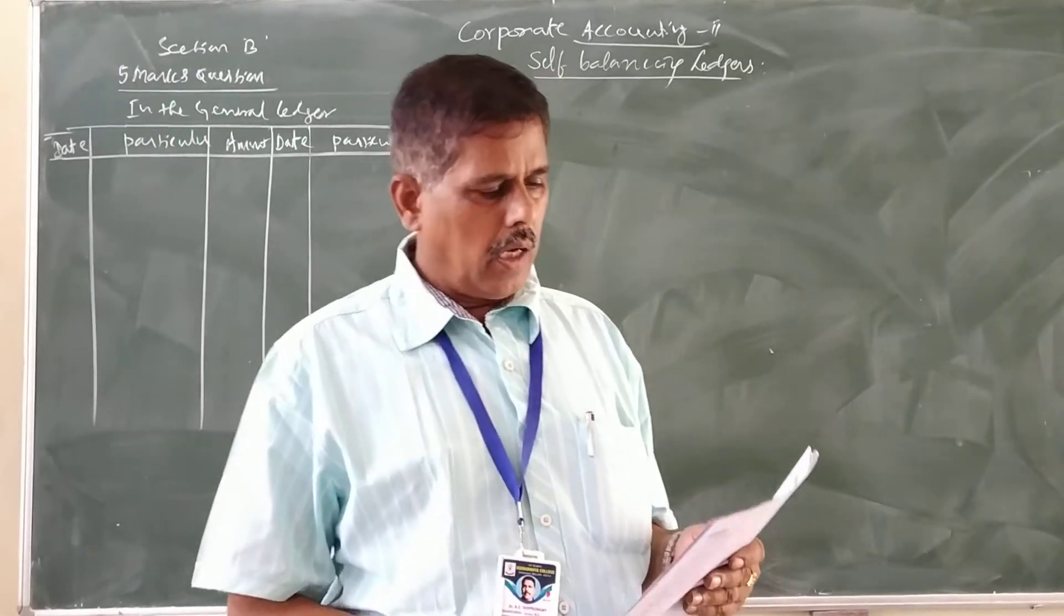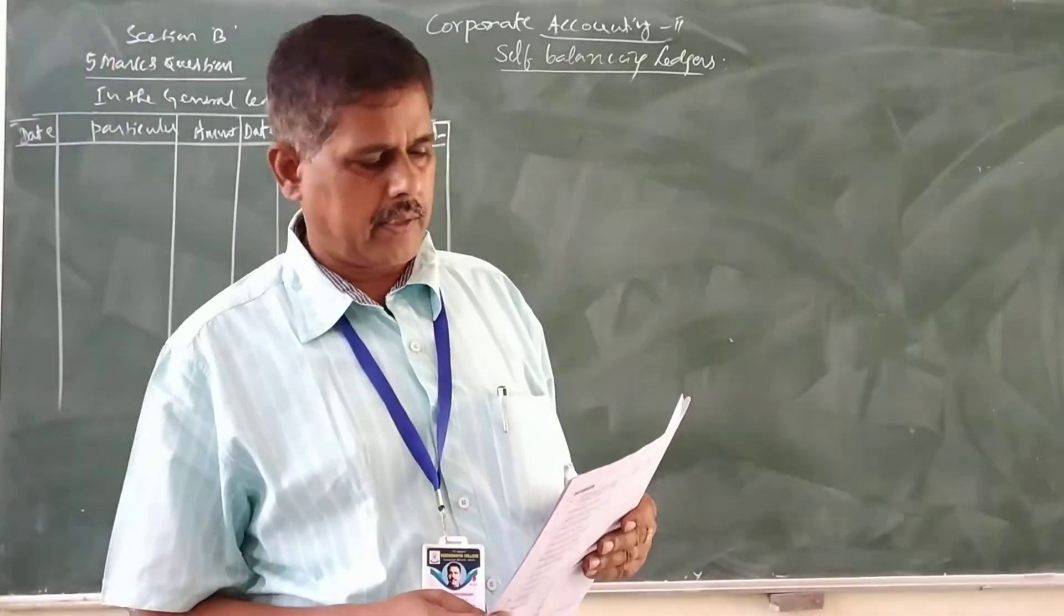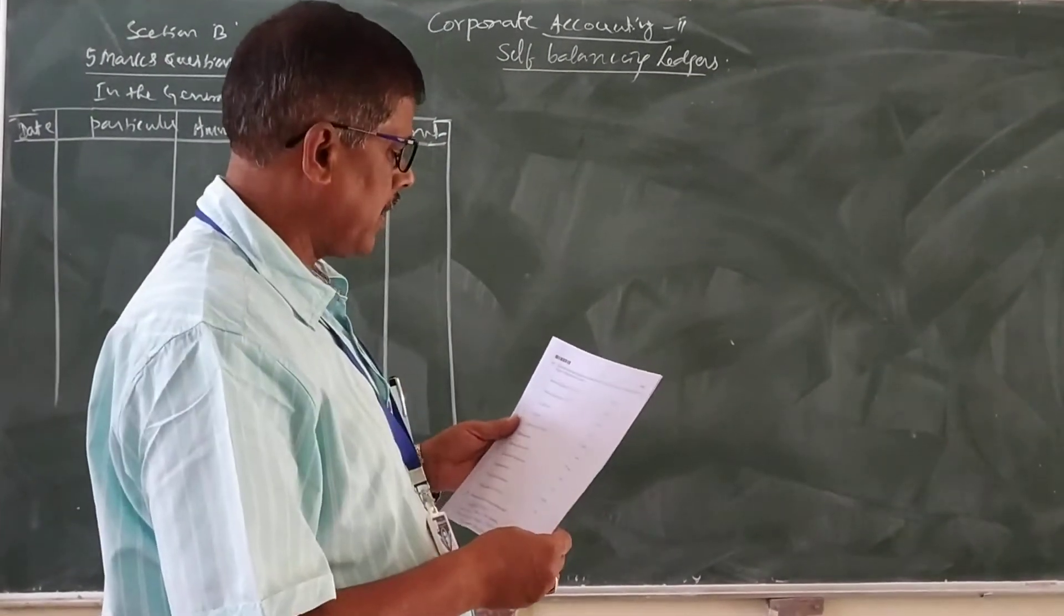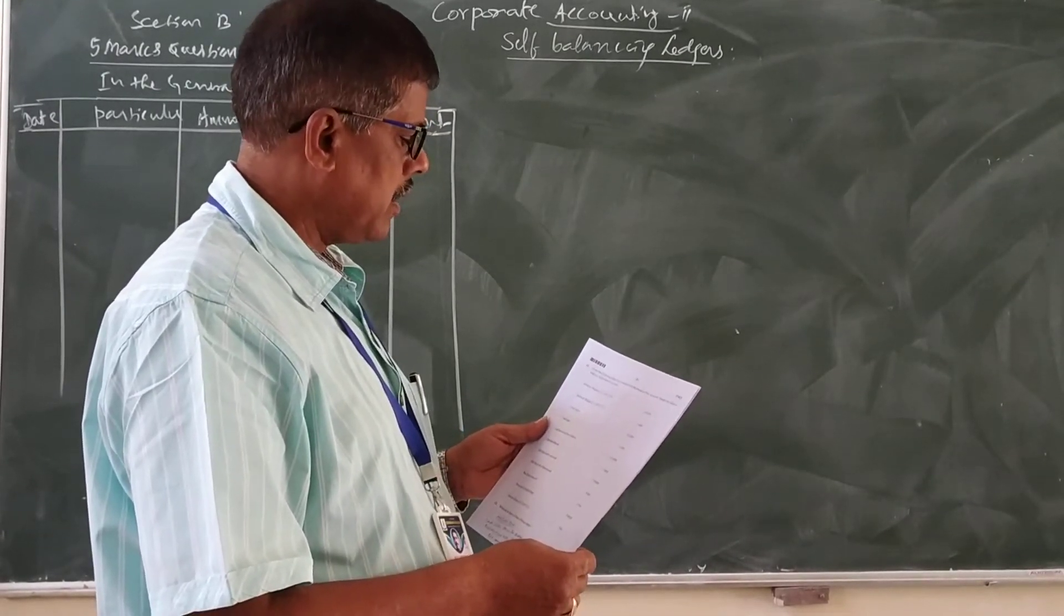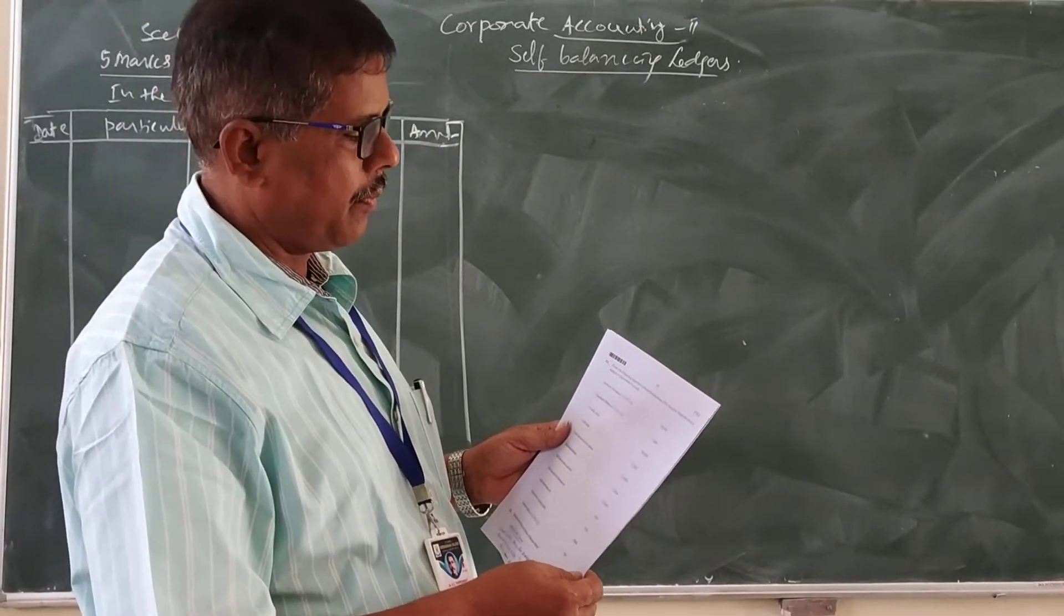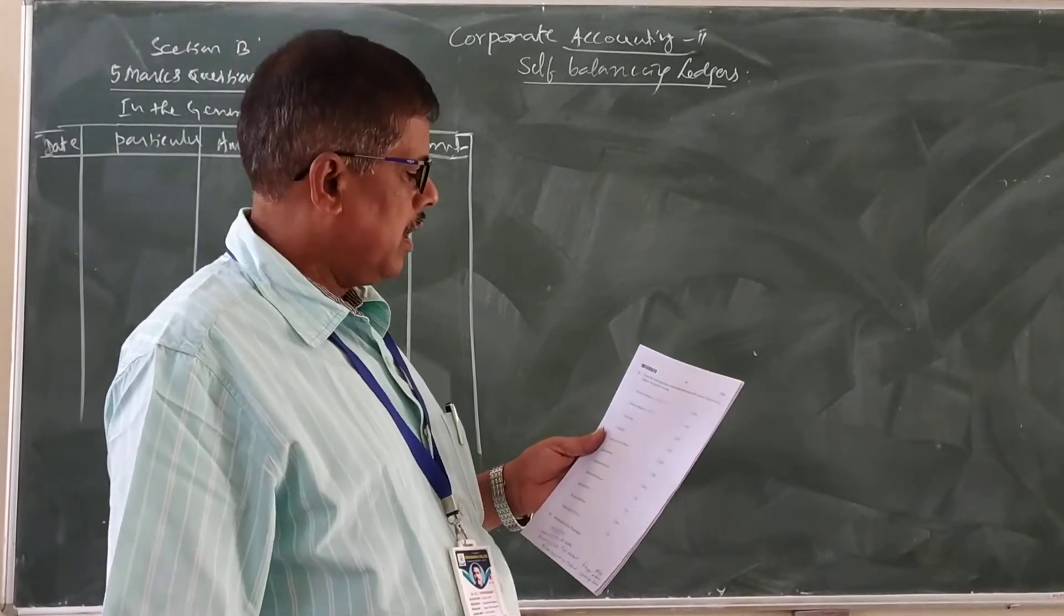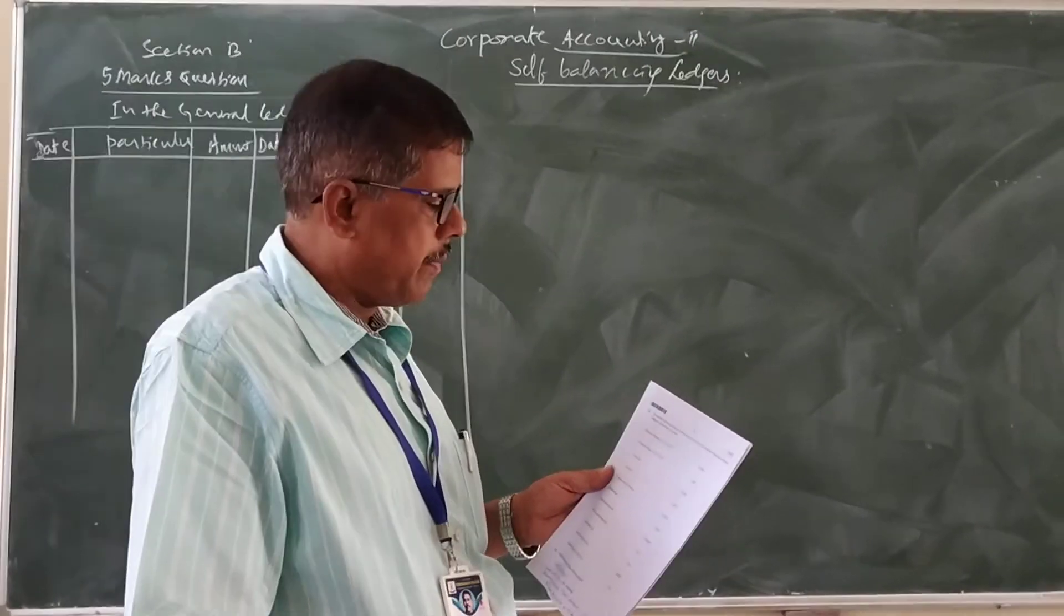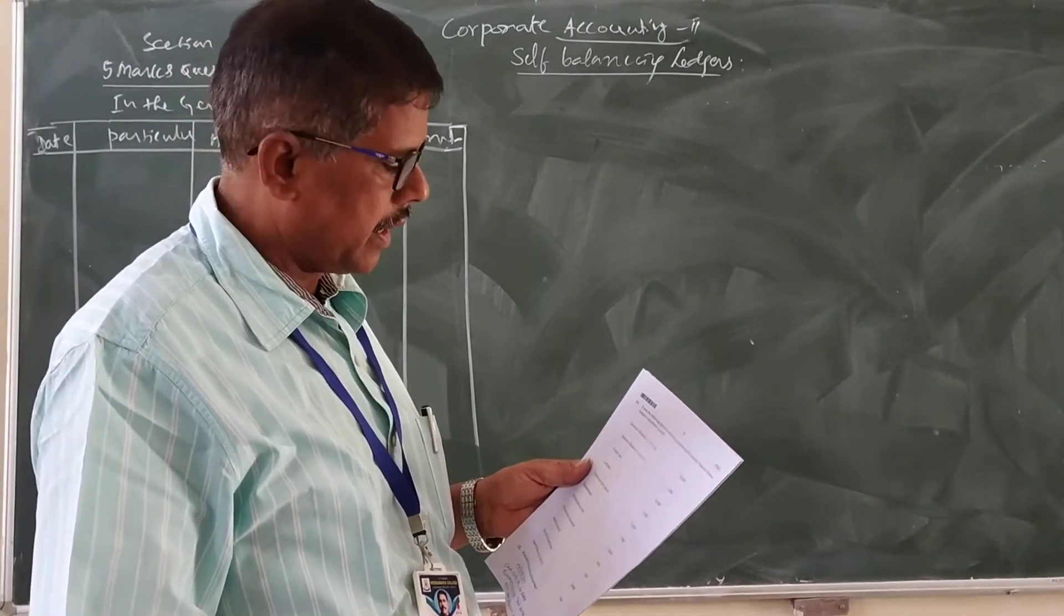Here I will read out the problem for 5 marks. From the following figures extracted from the books of Mr. Amrish, prepare the debtor's ledger adjustment account. They give all the transactions. Debtor's balance 1-1-17 debit balance 20,000, debtor's balance 1-1-17 credit balance. They give both the balances.